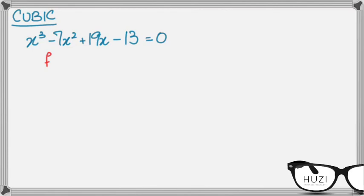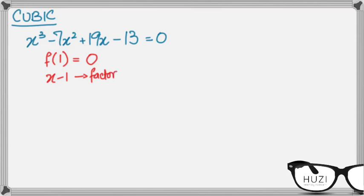I'll plug in 1 first. When I plug in 1, I get 1 cubed minus 7 plus 19 is 13, and minus 13 is 0. So x minus 1 is a factor. Now using this factor, I will solve for the quadratic factor of this cubic equation.